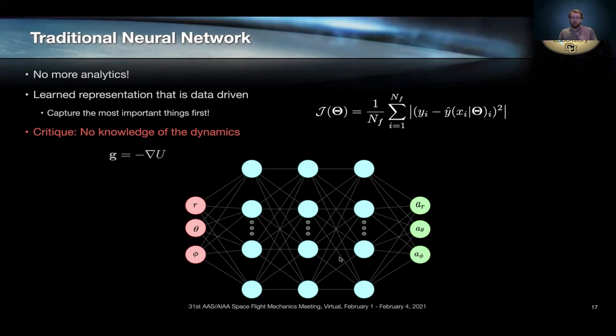This isn't inherently trying to be a spherical harmonic representation or a polyhedral. It doesn't matter. It's just trying to find the most efficient way to get from one space to the other. And this by itself, in its traditional form, works surprisingly well even for gravity modeling. But a reasonable critique of this approach is that training this network, the network representation has no knowledge of the underlying dynamics.